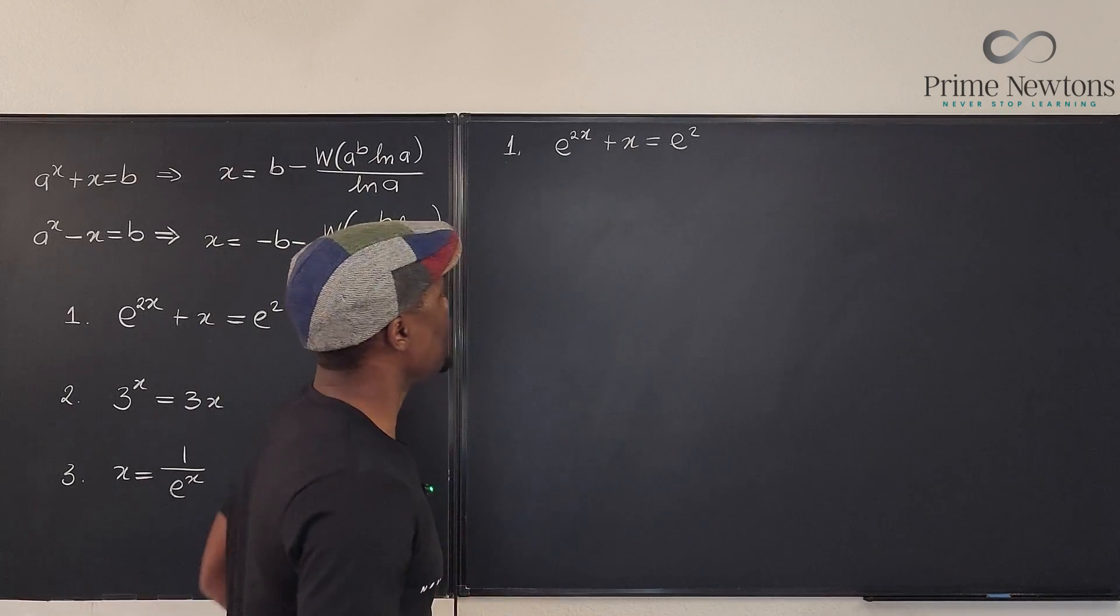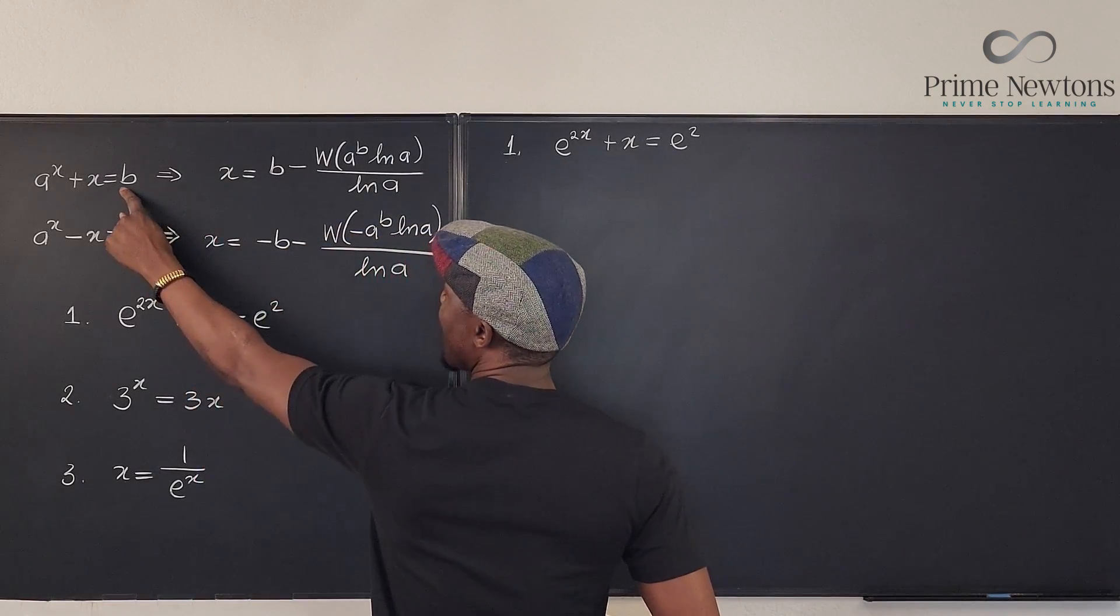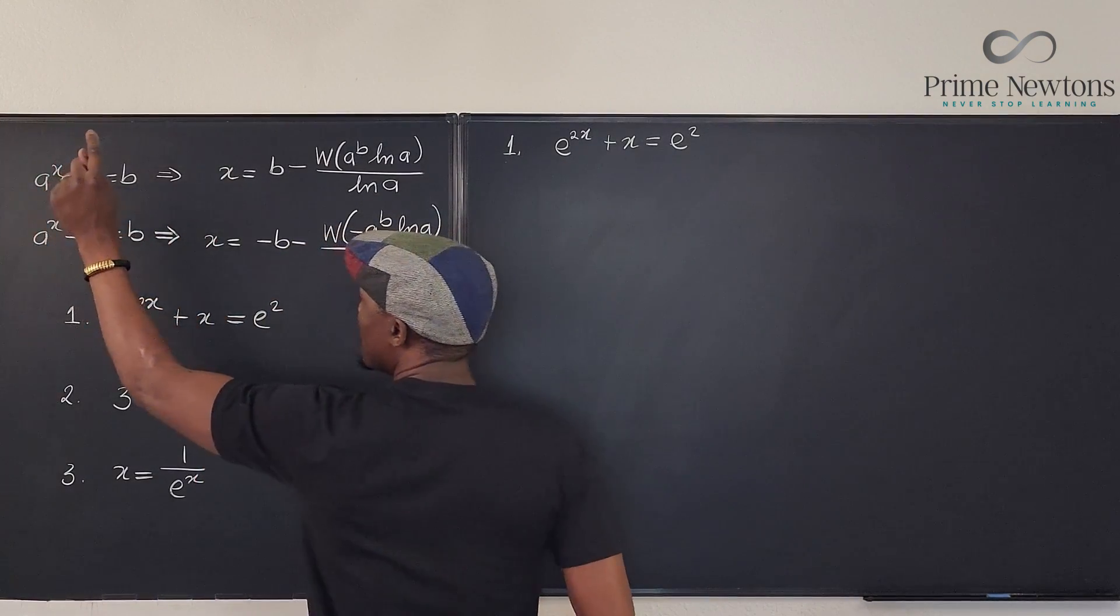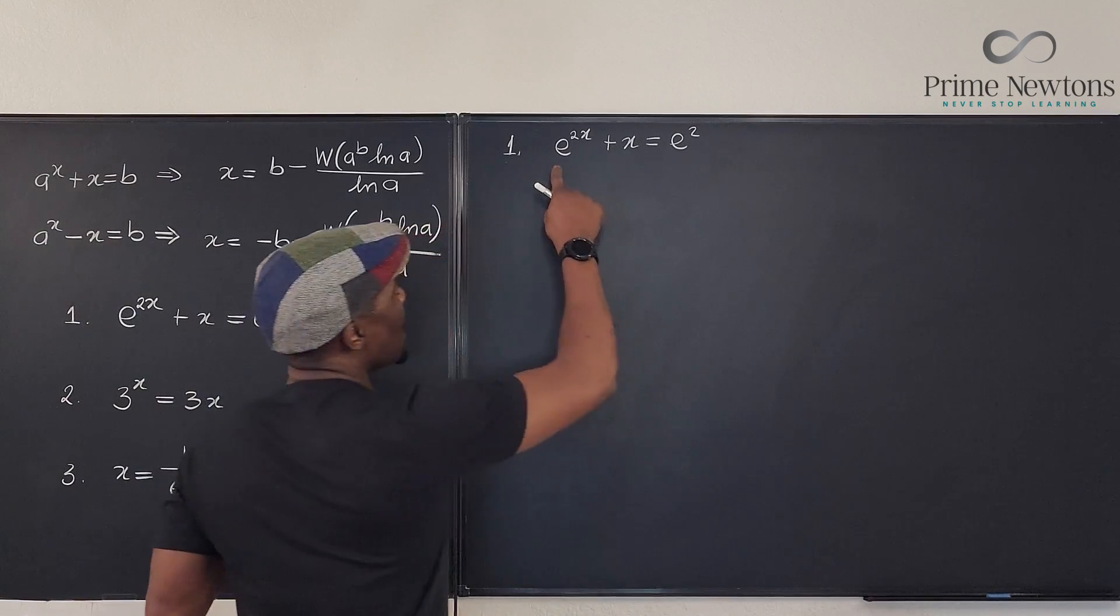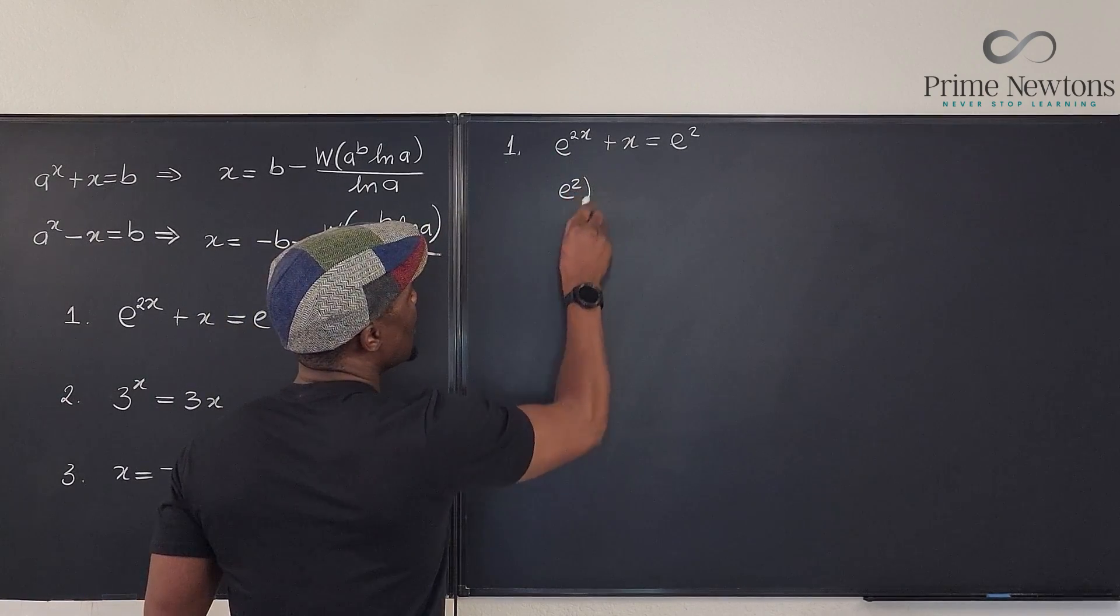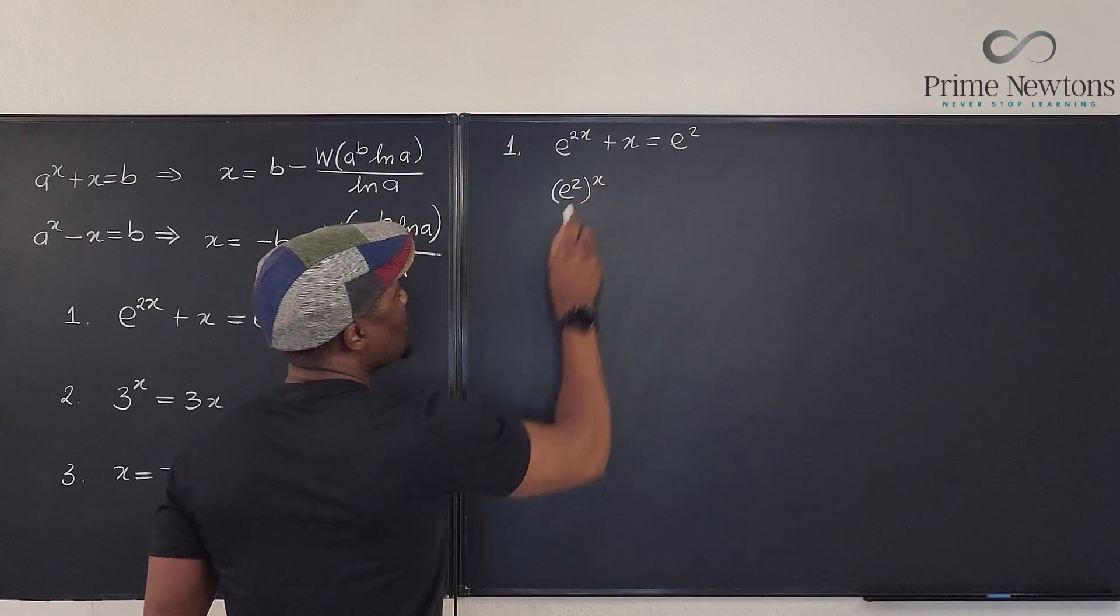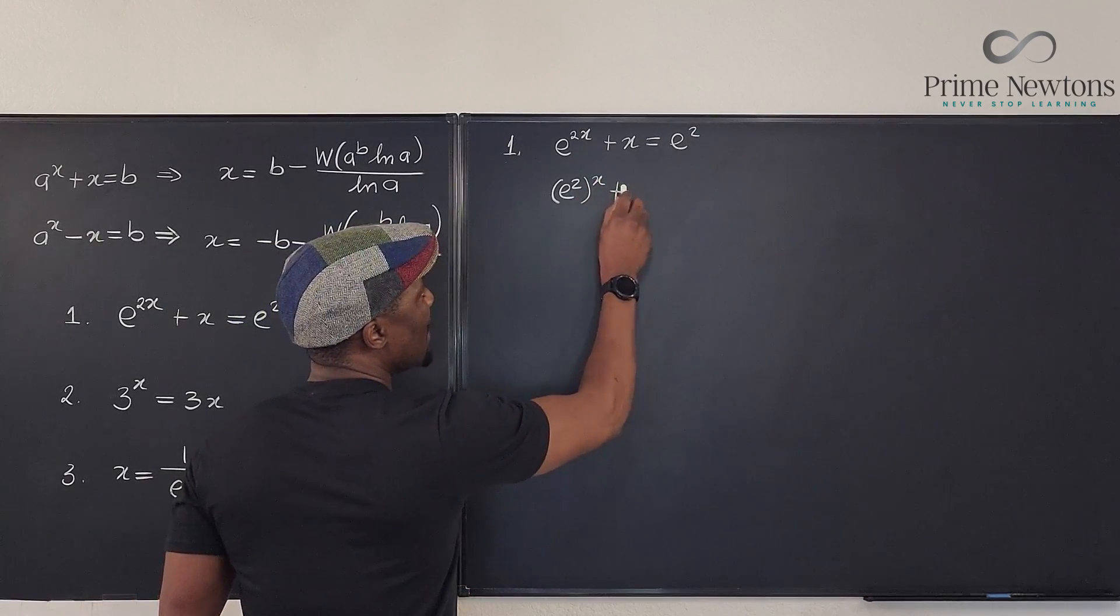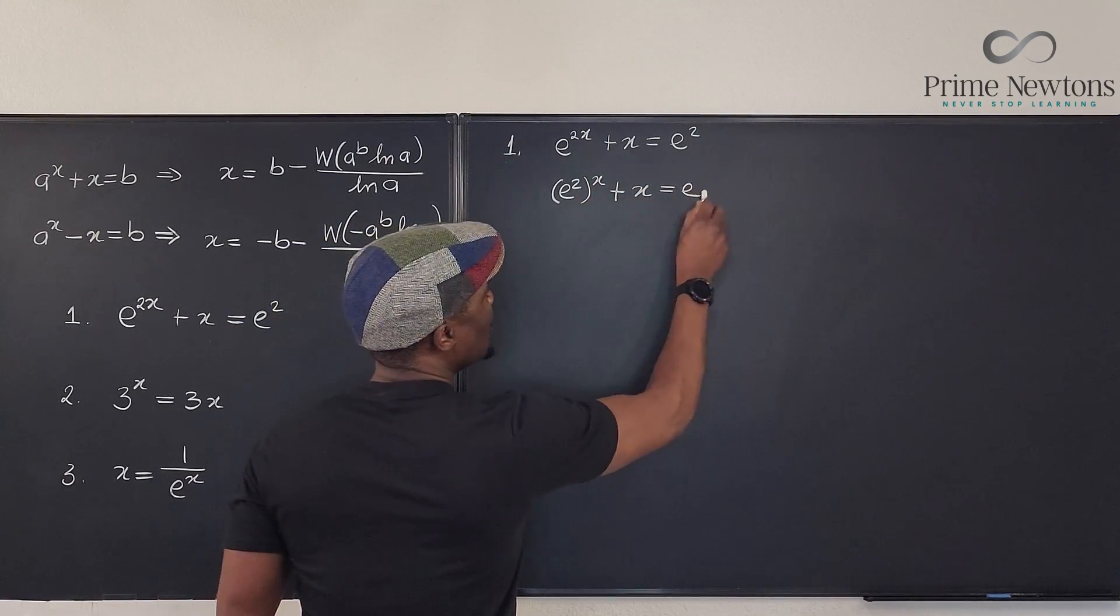So, let's do number one. Let's look at this. We want it to look exactly like this. So, we need a number here raised to power x. We can actually rewrite this to be equal to e squared raised to power x. You see that? Plus x equals e squared.